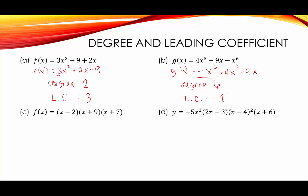One thing to note: if we have something like h(x) = 7, this is a polynomial function and it does meet the requirements. In this case, the degree — remember, the degree is the exponent of the variable with the largest exponent — well, here there are no variables. If we were to give 7 a variable, it would have to be x⁰, since x⁰ = 1. So we say the degree is 0, and the leading coefficient would just be 7. We usually don't come across this, but just in case you do, that's what we would do.